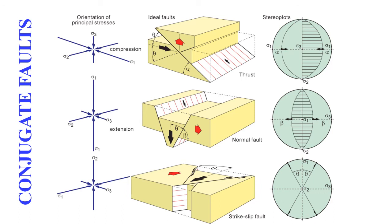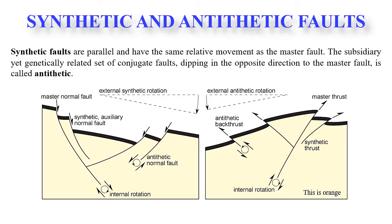Exceptions to Anderson's rules include low-angle normal faults and high-angle thrusts. Explanations involve the role of anisotropies or pre-existing fractures, and possible strain along the sigma-2 direction. Synthetic faults are parallel to the master fault and have the same relative movement. Antithetic faults have movement opposite to the master fault. For example, in a normal fault system, synthetic normal faults dip in the same direction as the master fault, while antithetic normal faults dip in the opposite direction.